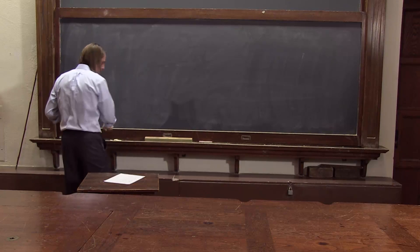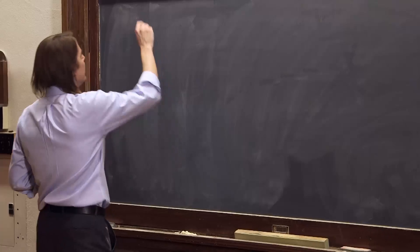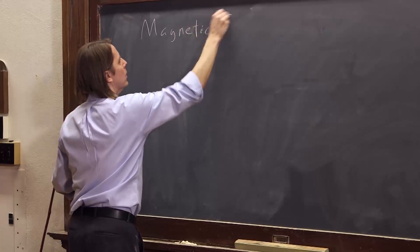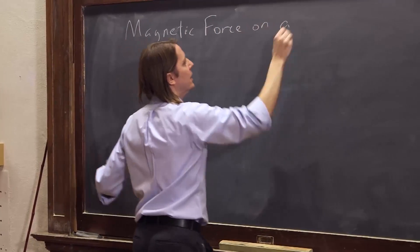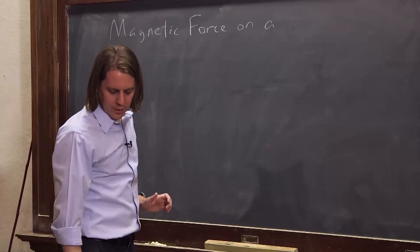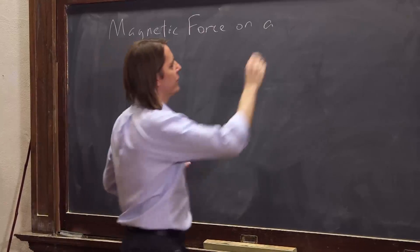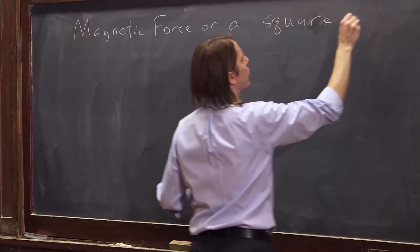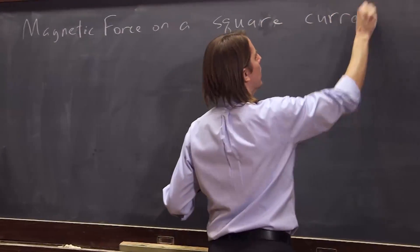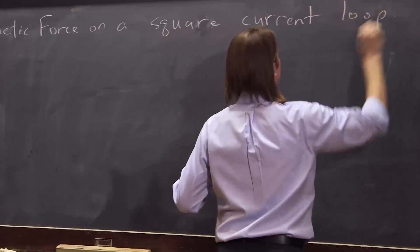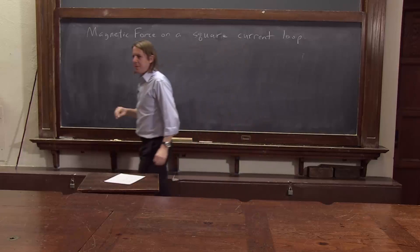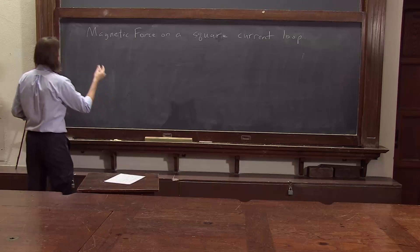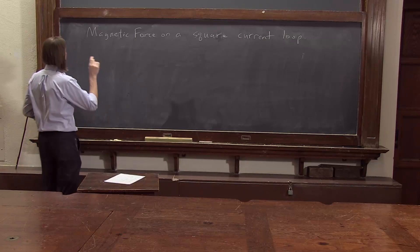Let's calculate the magnetic force on a square current loop. Keeping up with all these vectors, all these directions, the cross product, you've got to be fairly careful. Let's go ahead and define a coordinate system.